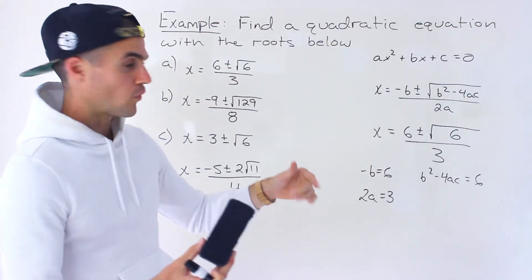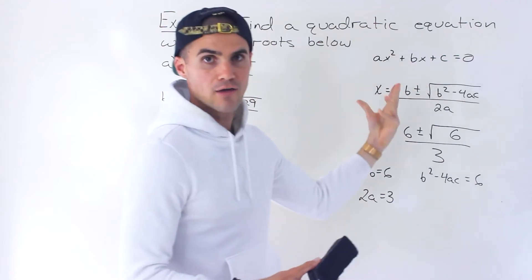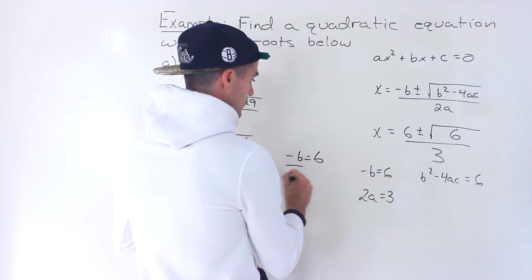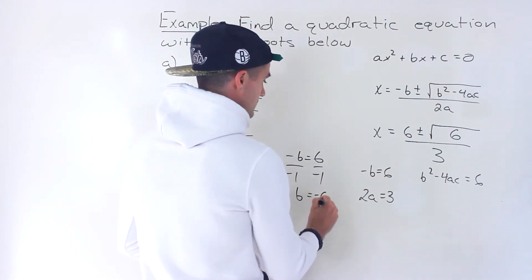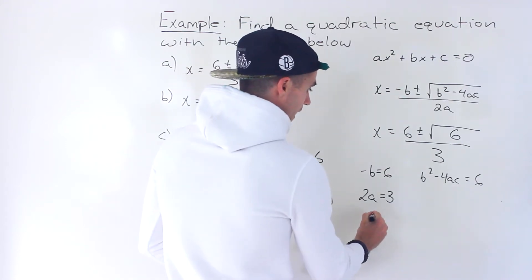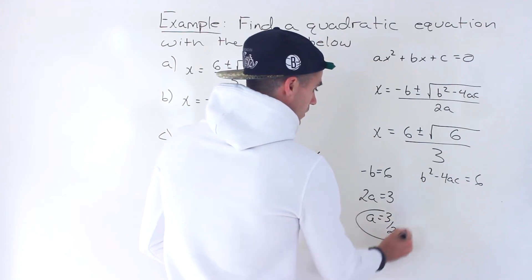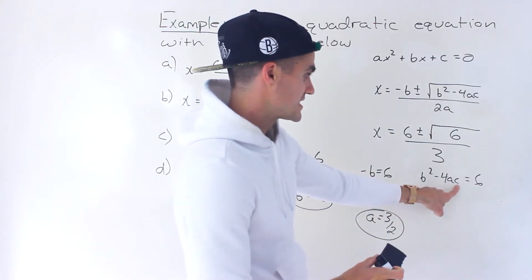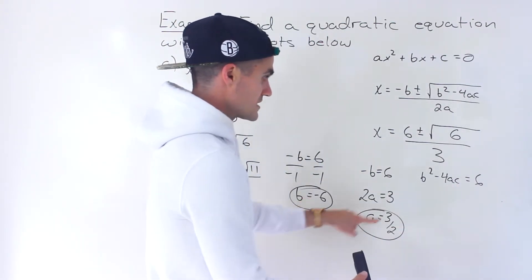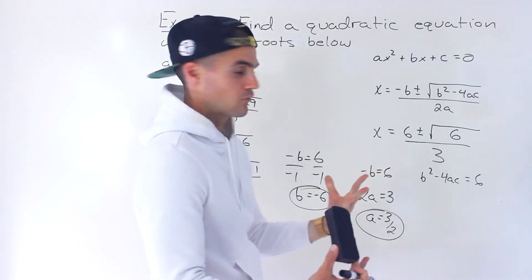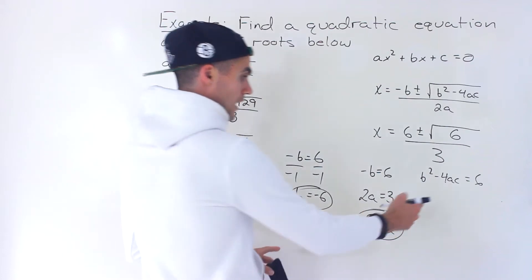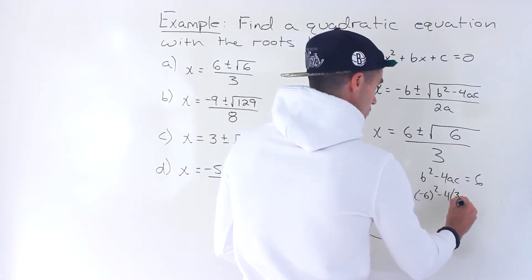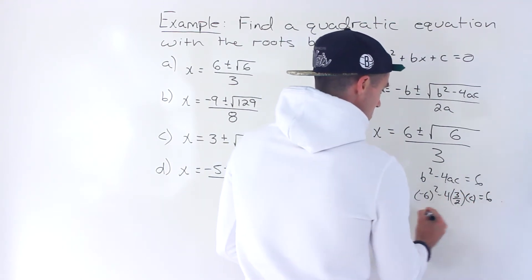Then we solve for a, b, and c to get our quadratic equation in standard form. With negative b equaling 6, dividing both sides by negative 1 gives b = −6. And since 2a = 3, a = 3/2. Now we need to solve for c. We plug in b = −6 and a = 3/2: we get (−6)² − 4·(3/2)·c equals 6.